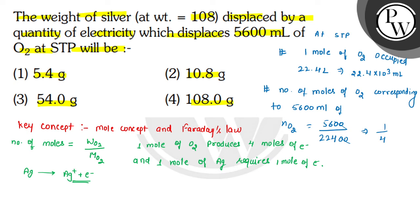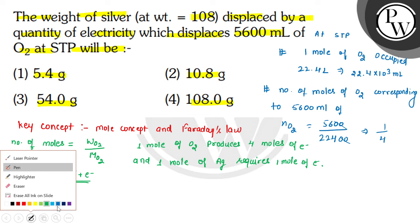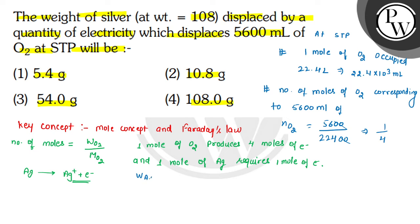Using this formula and Faraday's law: weight of silver divided by molecular mass of silver, multiplied by 1, because 1 electron is used, equals weight of oxygen divided by molecular mass of oxygen, multiplied by 4.